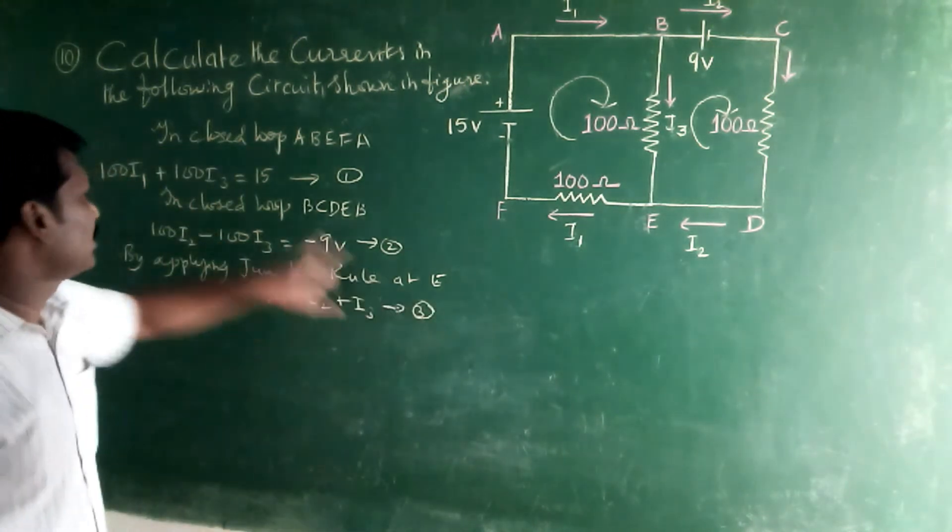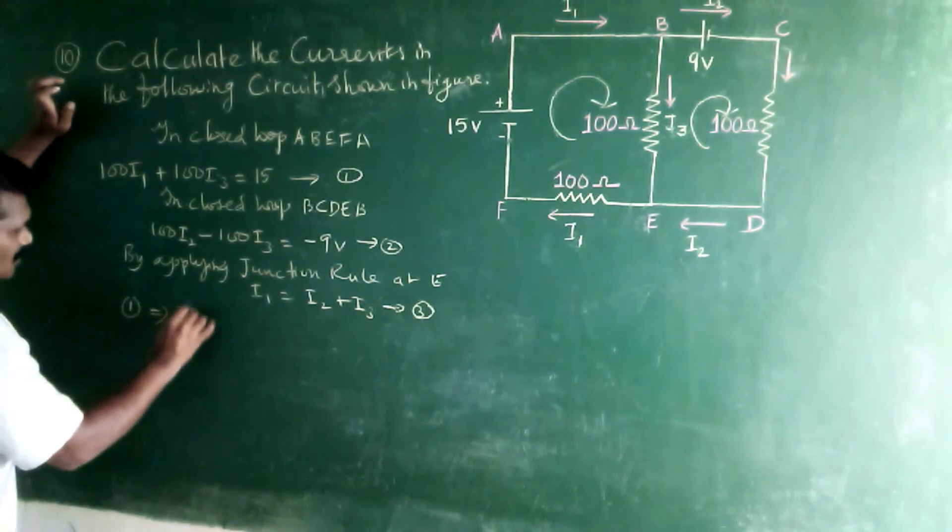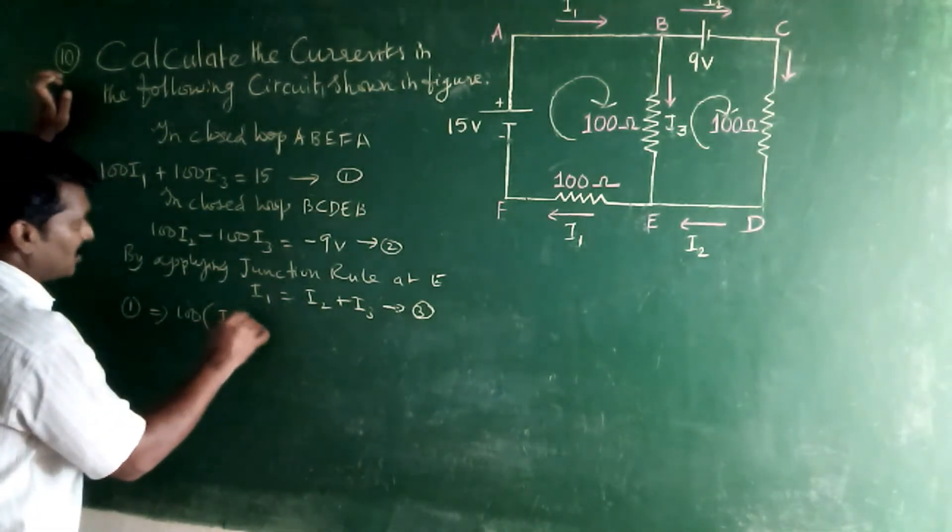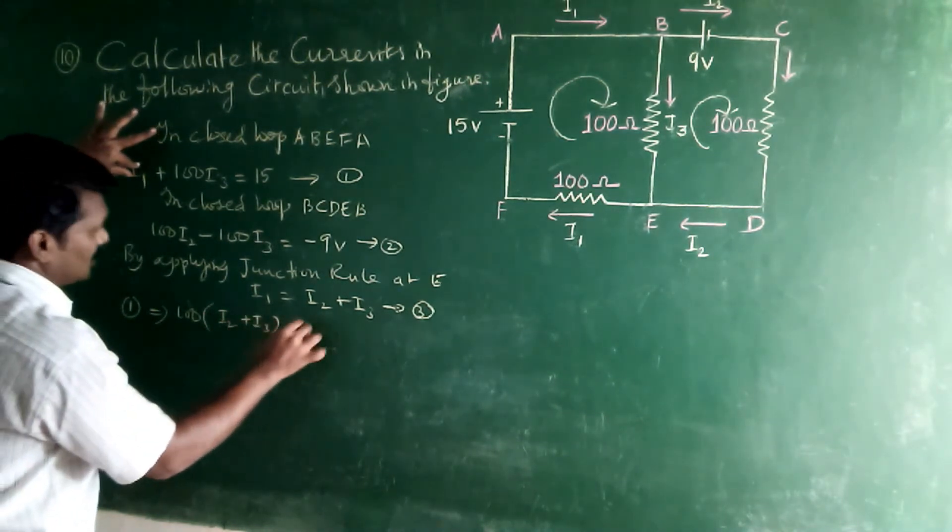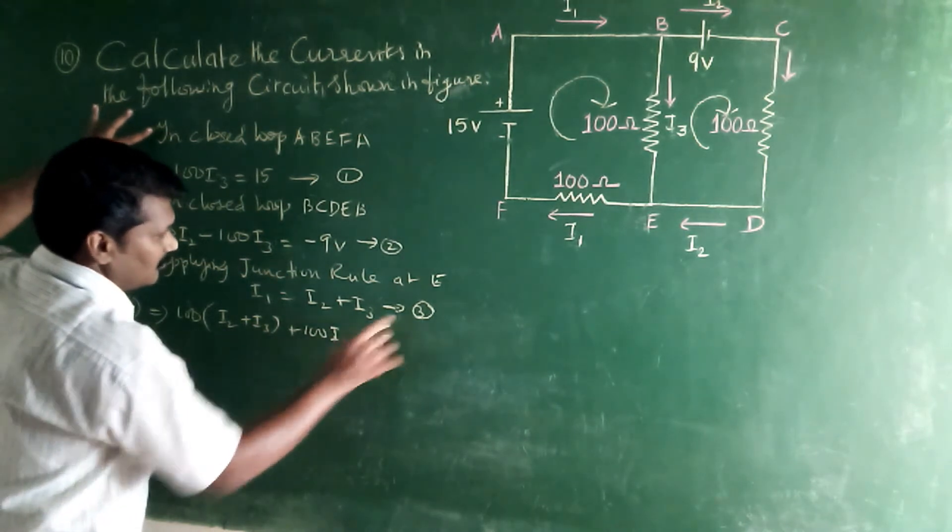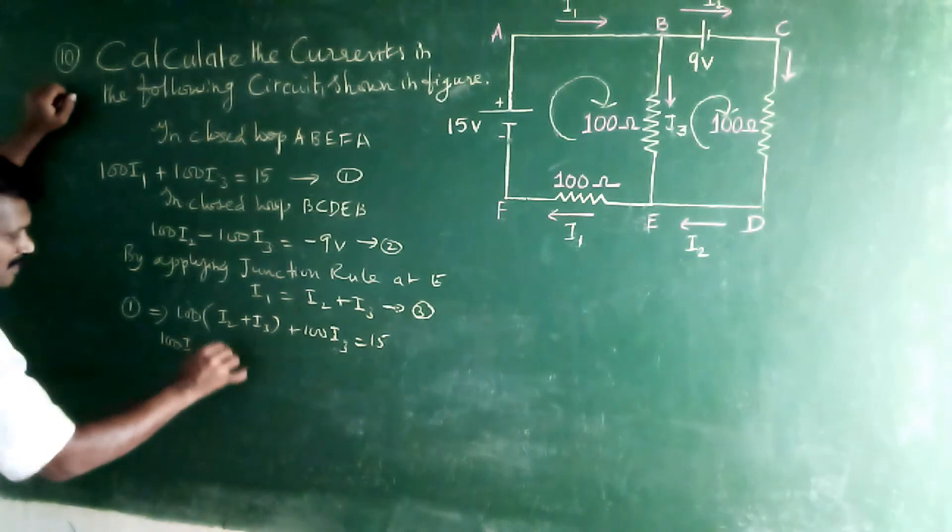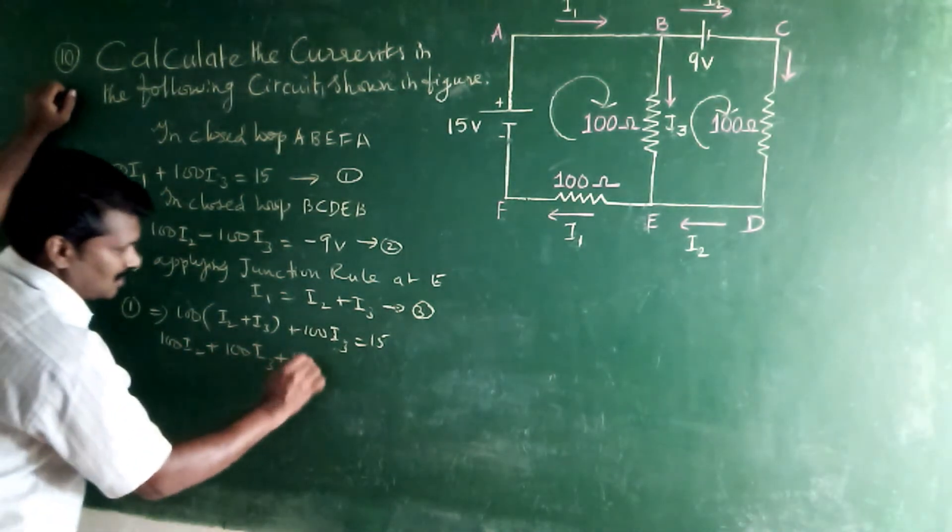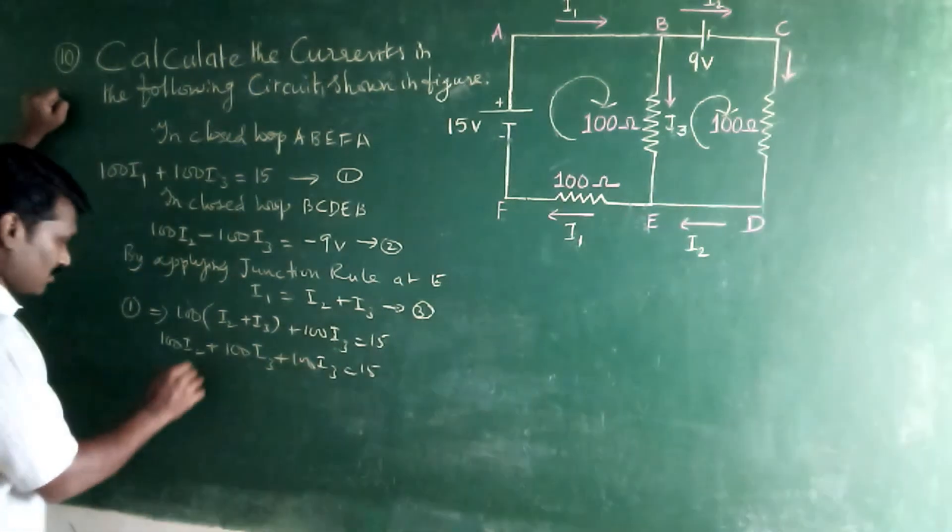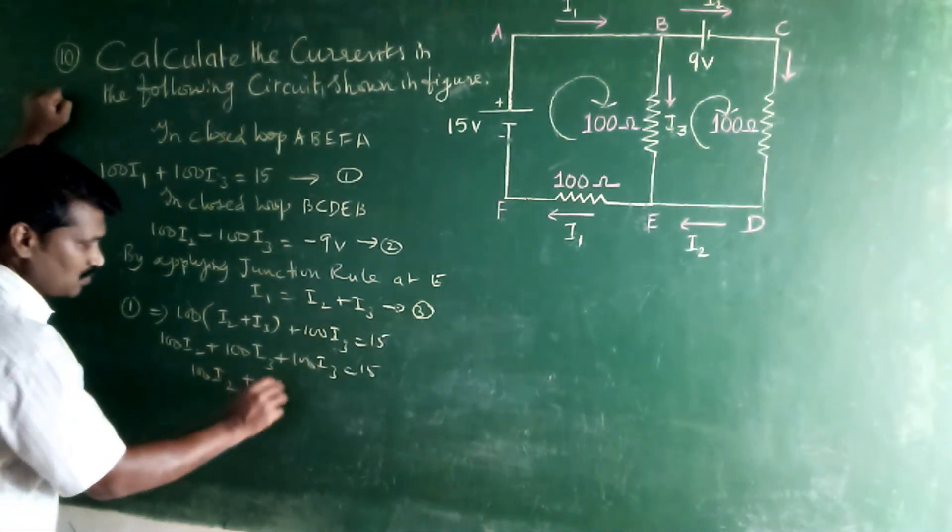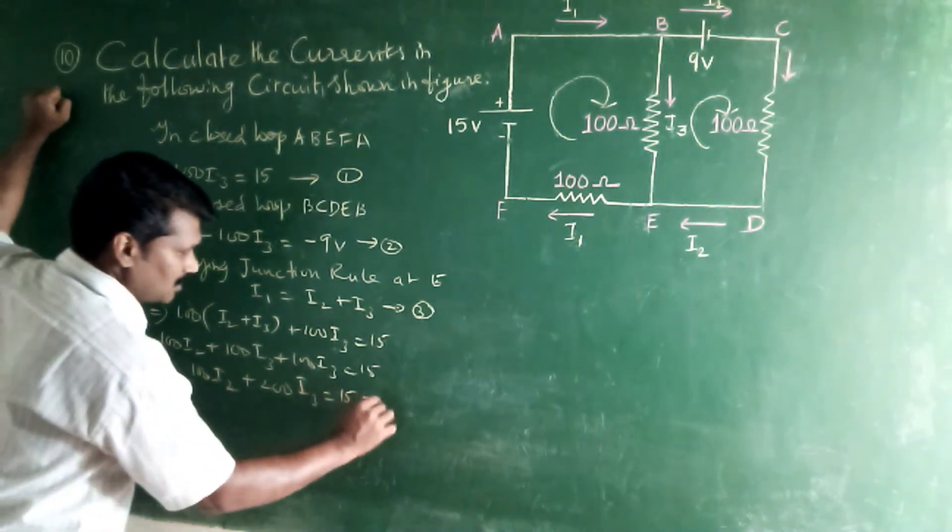So I1 is equal to I2 plus I3, equation 3. Now substitute equation 1. Then we can get that. Under I1 is equal to I2 plus 15. I2 plus I3 equals 15. This is equation number 4.